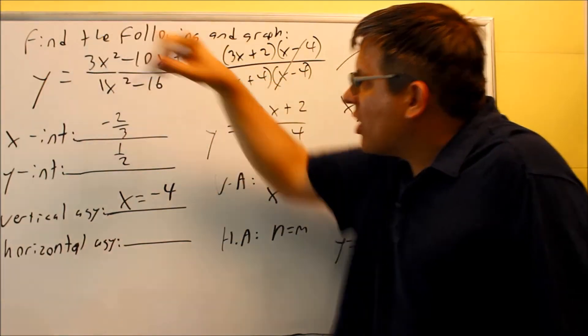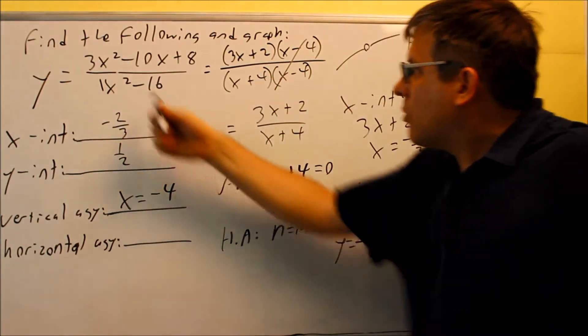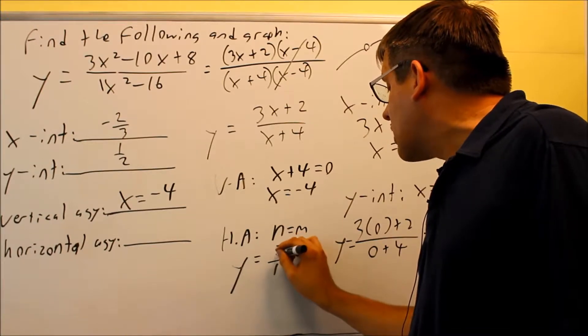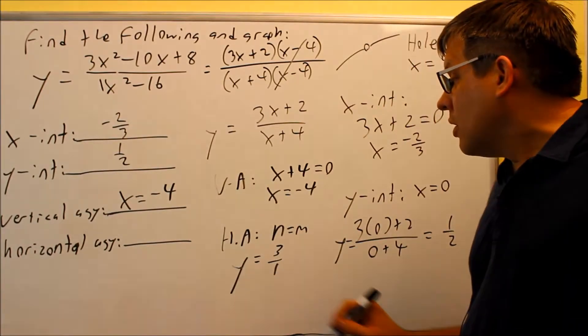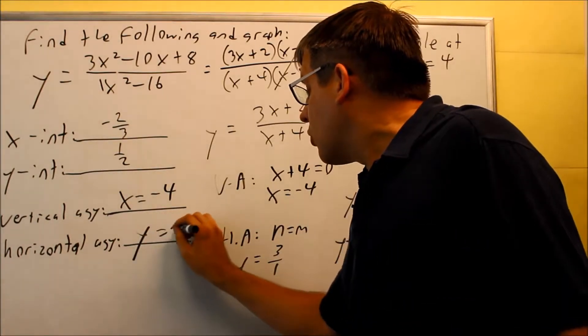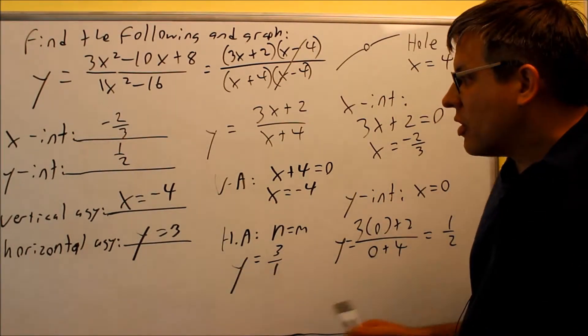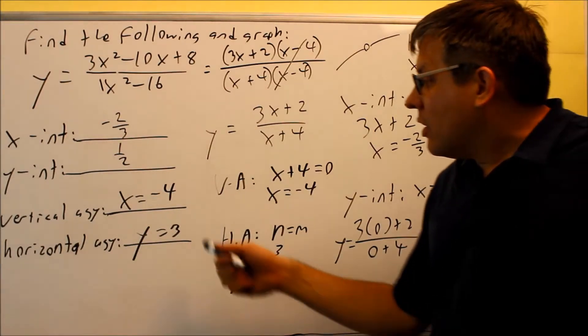When that happens you're going to divide the numbers that come in front of the x squares. So the numbers, those leading coefficients, those are the ones that you're dividing. So in this case I have three divided by one, so therefore y equals three is going to be the equation for my horizontal asymptote. So this time I only have one vertical and I have one horizontal. I'm ready now to draw the graph.